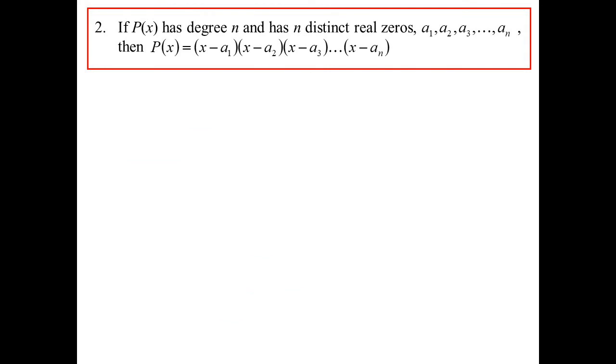Okay, so the next one. If we know a polynomial is of degree n, and we know there are n distinct zeros, a1, a2, and so on, then that must be the polynomial. x minus a1, x minus a2, x minus a3, x minus an, or some multiple, I guess you could have everything times 2 or so on.